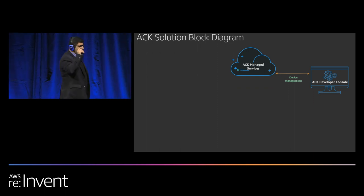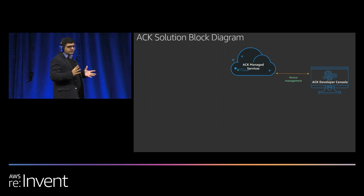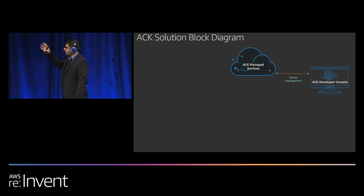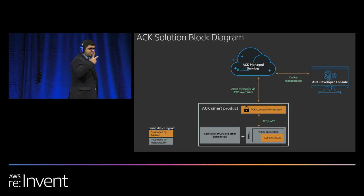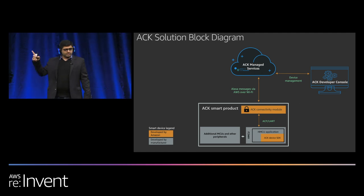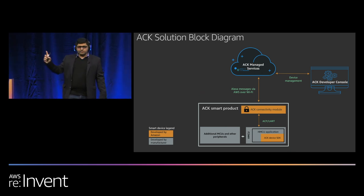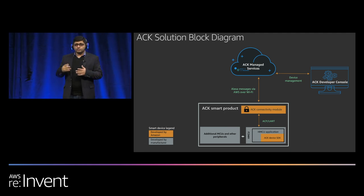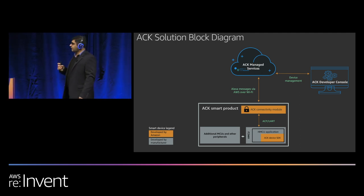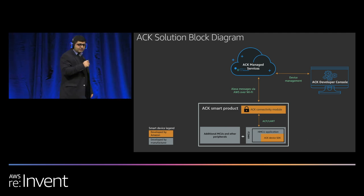When you create the product, it creates a virtual copy in the ACK managed service — a virtual product type in the cloud. The next thing you do is get the connectivity module. Amazon doesn't build this module; you talk to one of the suppliers. But what Amazon provides is a managed firmware that goes on the ACK connectivity module. The concept of a managed firmware means you don't have to worry about setup or security — it creates a secure pipe to your virtual object in the cloud.